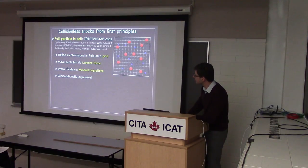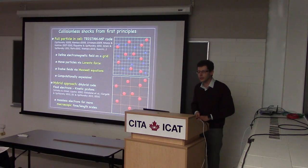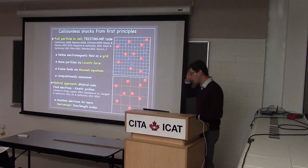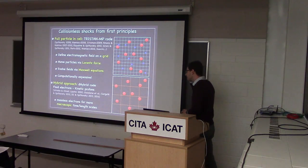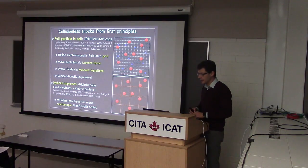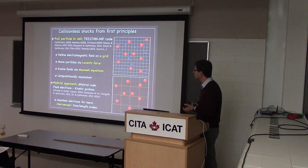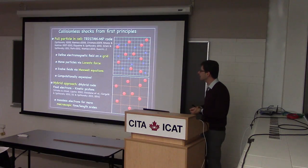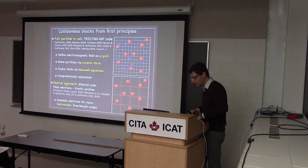The methods we use are kinetic simulations. There are two kinds. One is called the particle-in-cell method, which discretizes the plasma as a lot of particles — positive and negative — tracked on a grid.